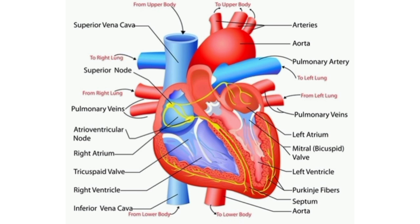In the lungs, the deoxygenated blood is oxygenated. Now let us talk about the left side of the heart.